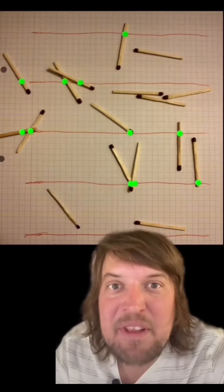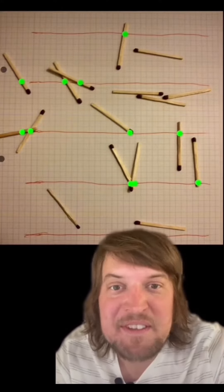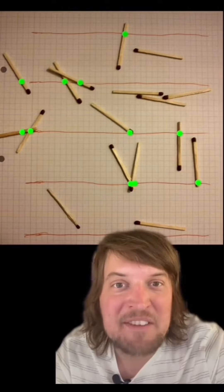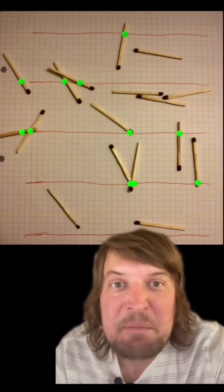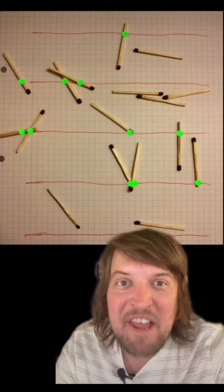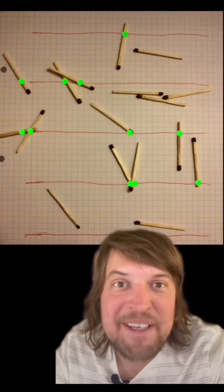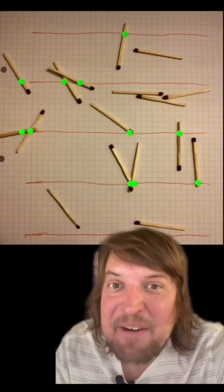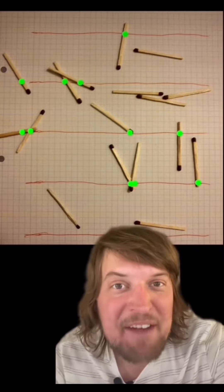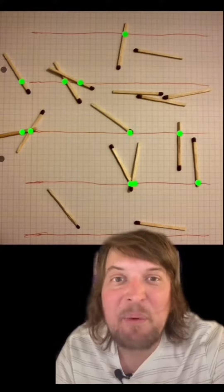In this actual example, the length of the matches and the length of the distance between lines is the same at 9 squares. There are 17 matches and they intersect the lines 11 times. So 17 divided by 11 is 1.54 repeating. And when you double that, on account of the matches being twice the length of half the distance, you end up with 3.09.